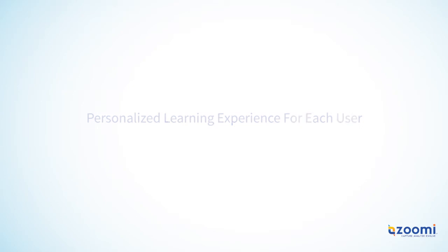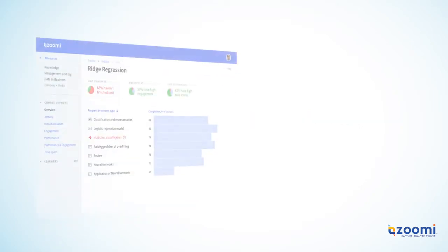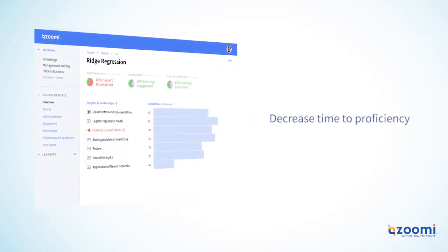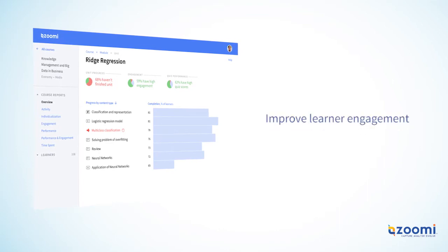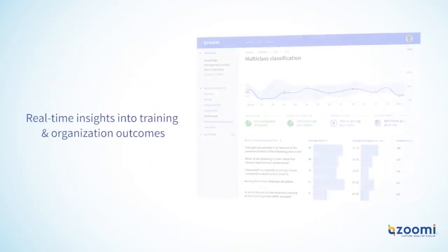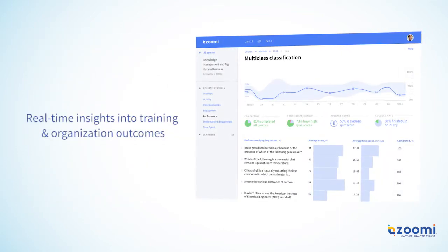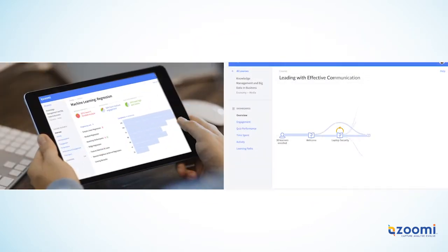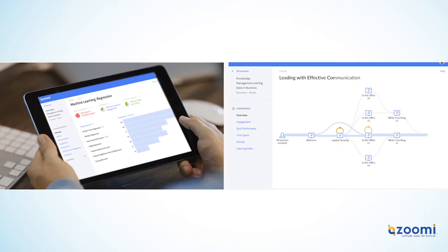Zumi leverages over 250 algorithms to increase learning efficacy, decrease time to proficiency, improve learner engagement, and provide real-time insights and visibility into training and organization outcomes. This enables us to predict learner performance and outcomes and personalize each course to the individual learner.